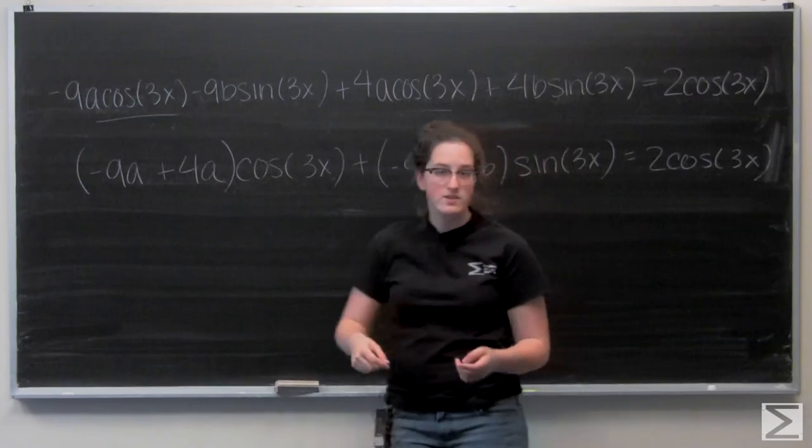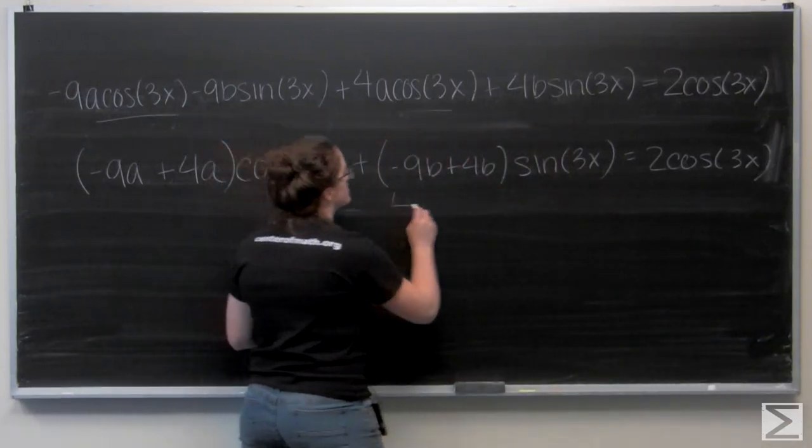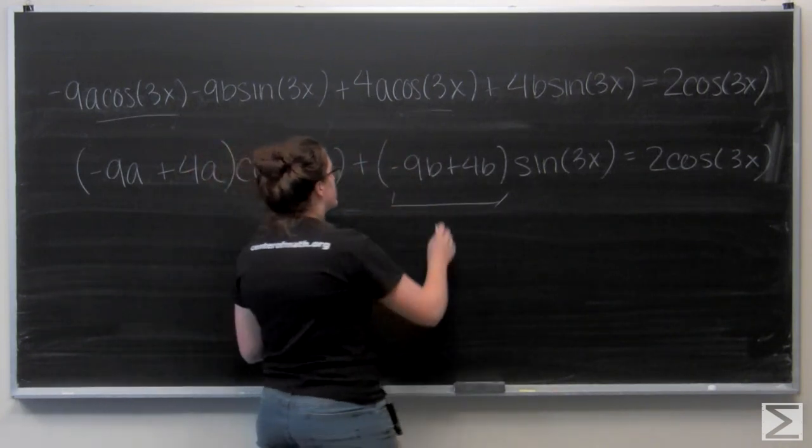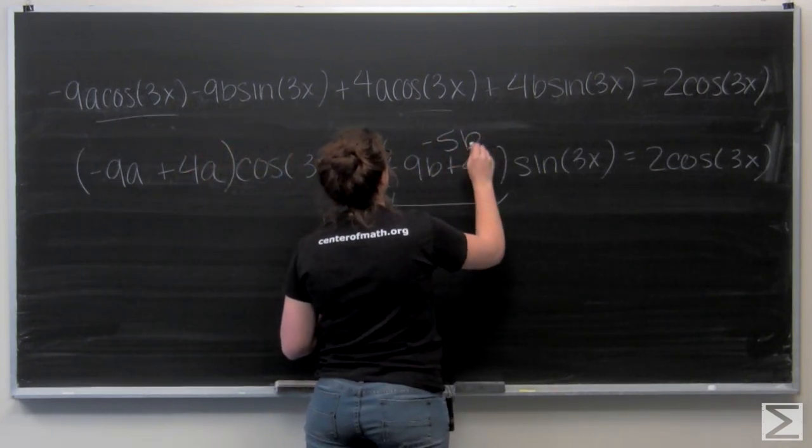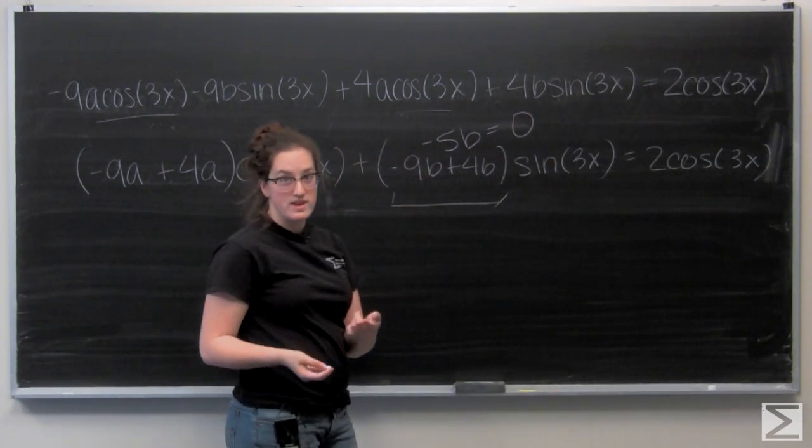Well I don't have a sine term on the right side of my equation. So I know that this needs to be equal to 0. And if I add those together I get negative 5b. That has to equal 0. So I know that b is going to equal 0.